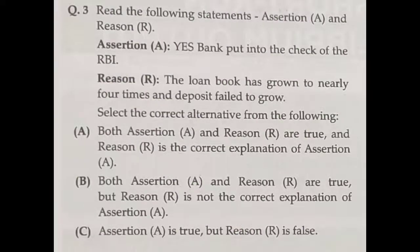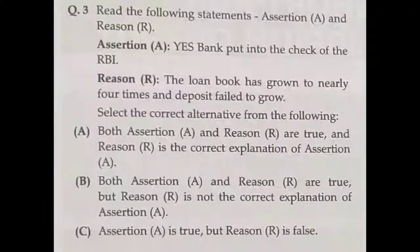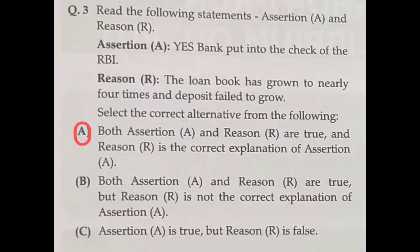Question three: read the assertion and reason. Assertion: Yes Bank's assets came under RBI's scanner — correct, it is given at the end of the paragraph. Reason: the loan book grew to nearly four times while deposit growth failed to keep pace — that is also correct and is the main reason. So both assertion and reason are true and reason correctly explains the assertion — option A is the correct answer.